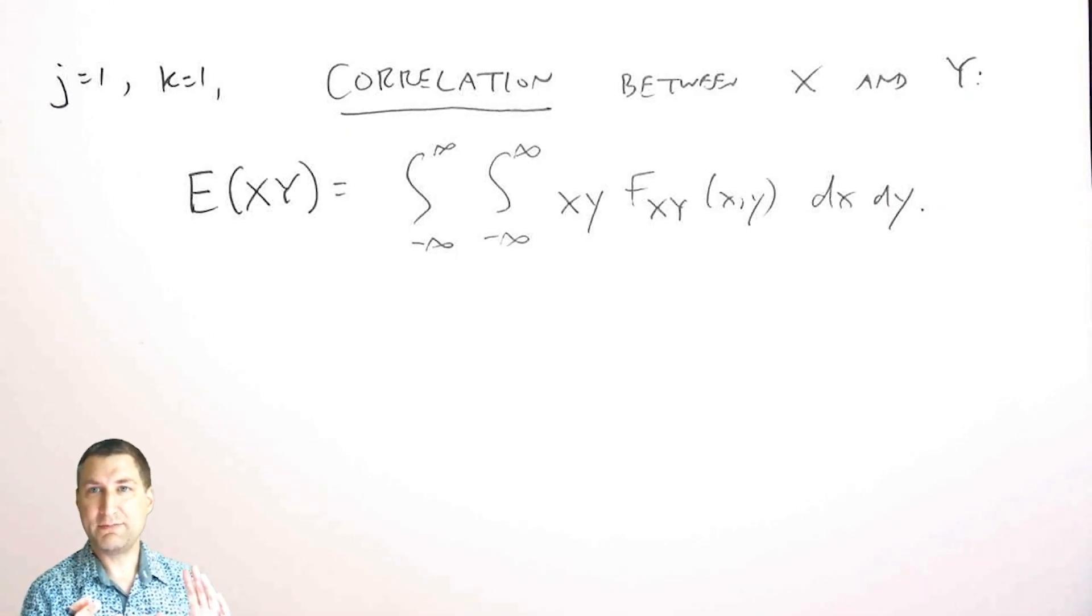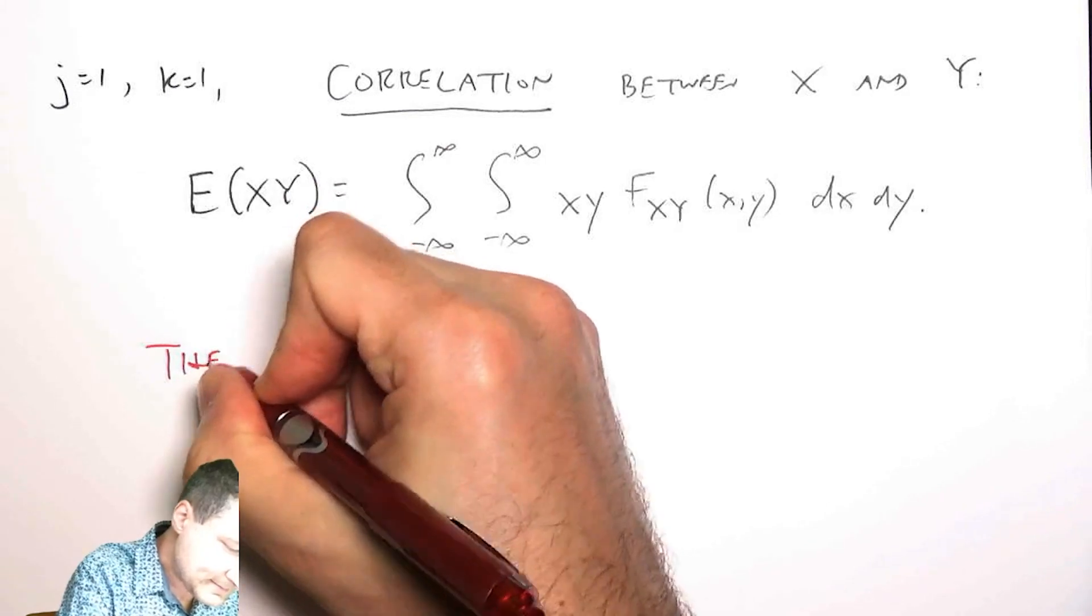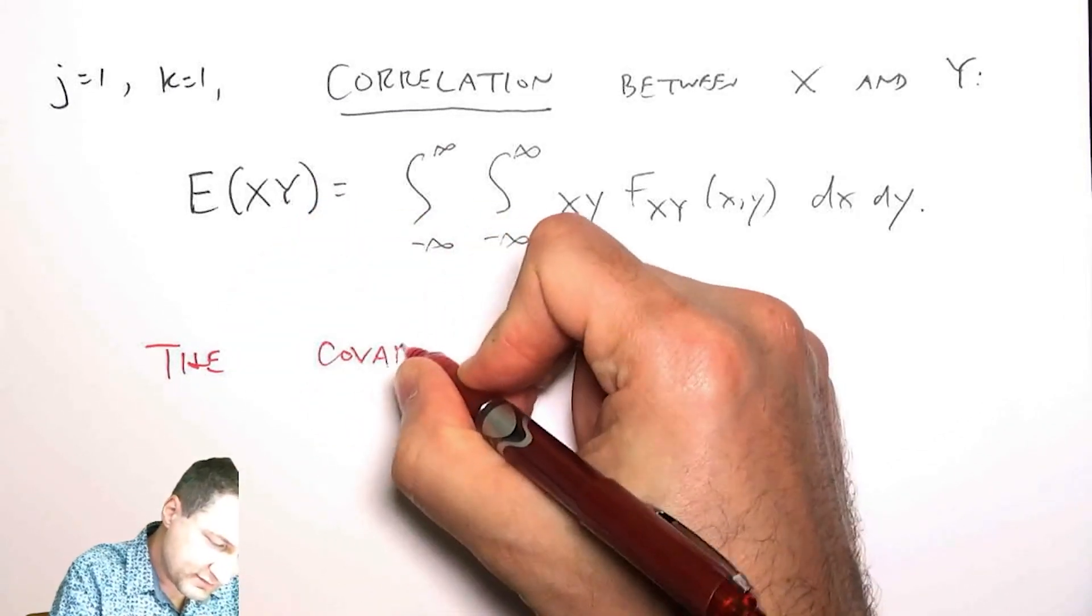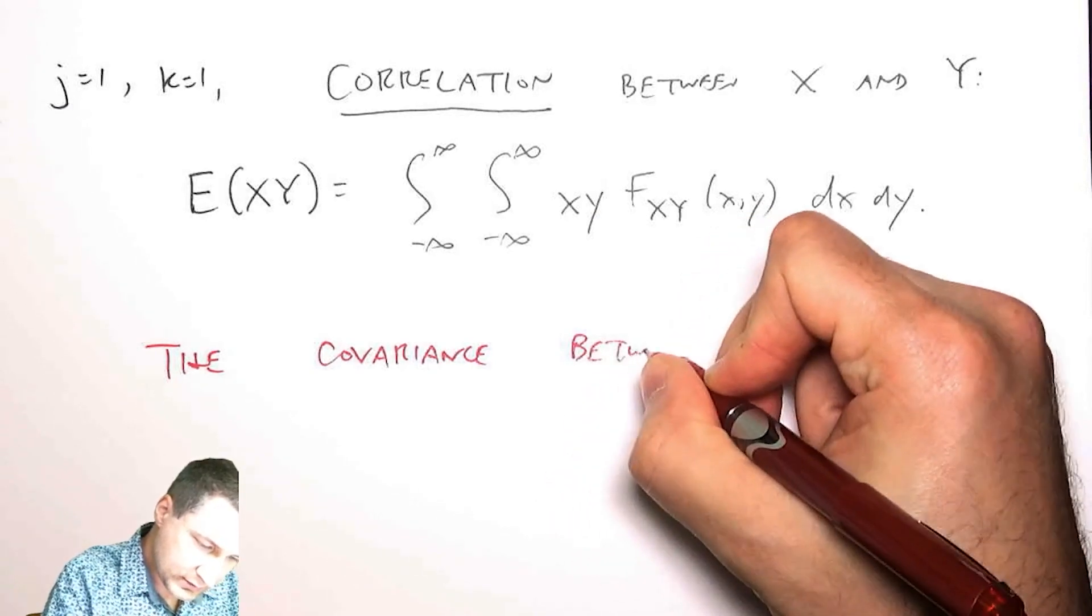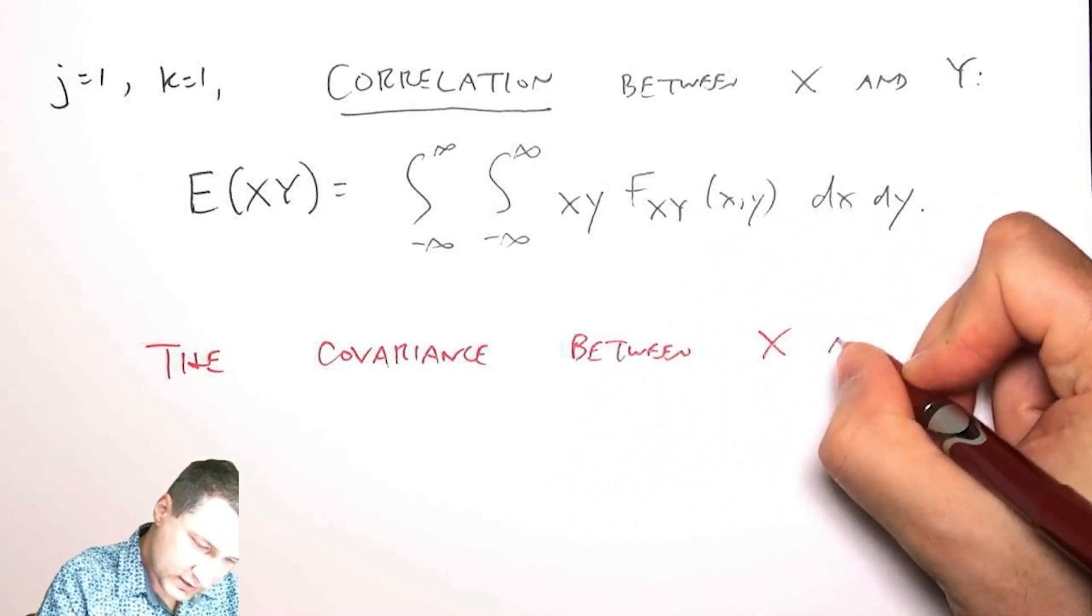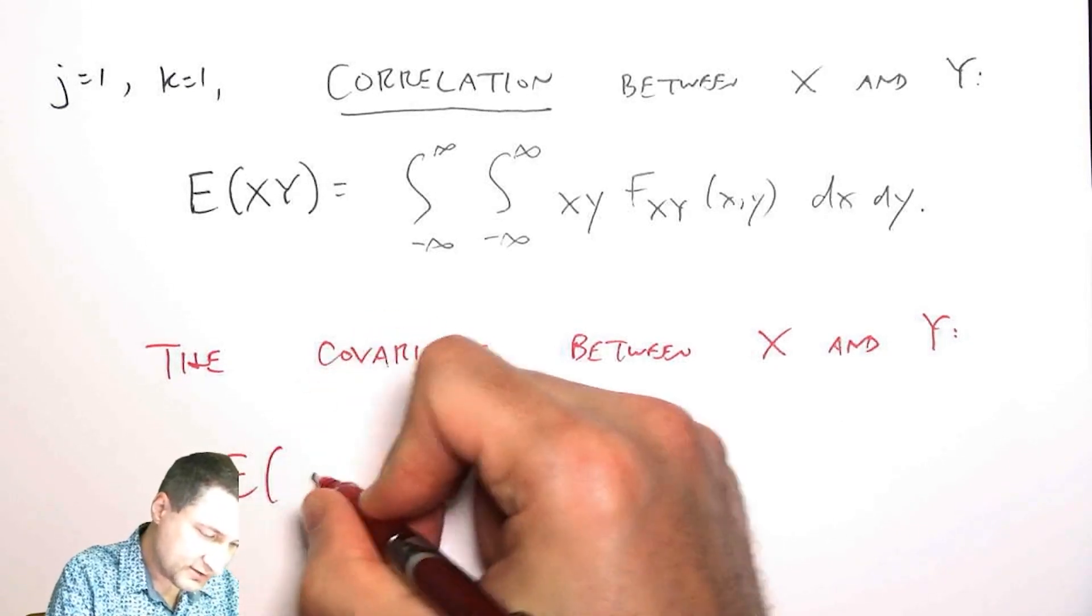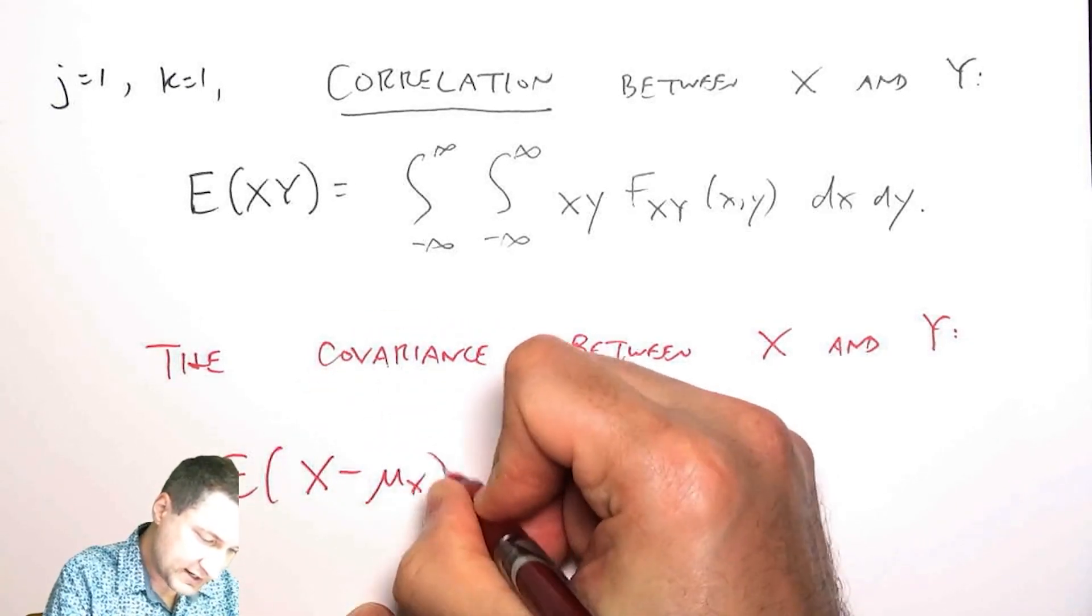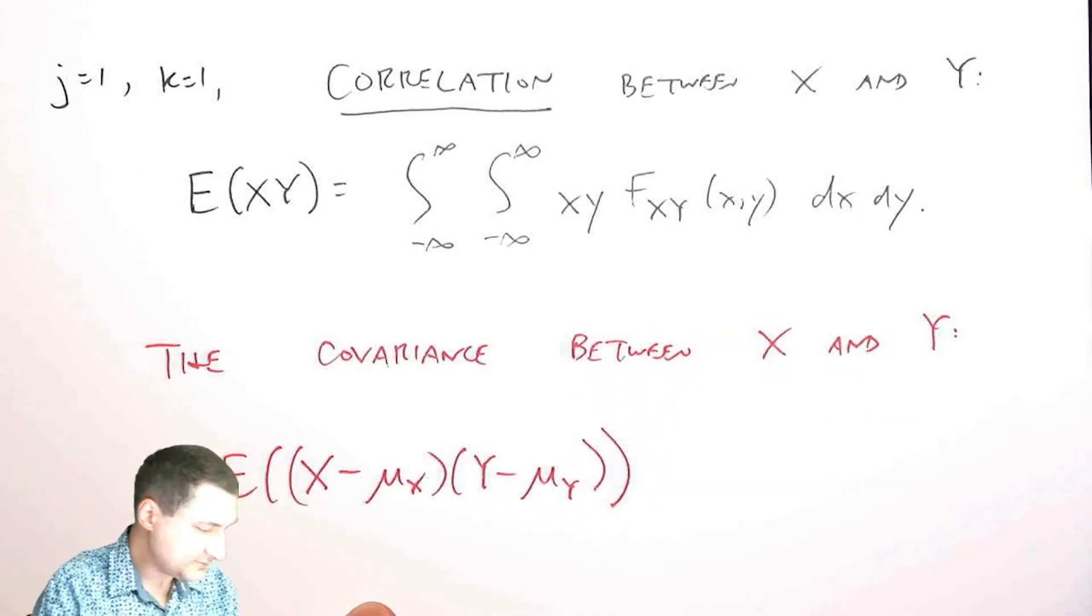Now we also care about what happens when I take the kind of central moment like this. And so the covariance is the name that we give that. So the covariance between X and Y is the expected value of X minus its mean times Y minus its mean.